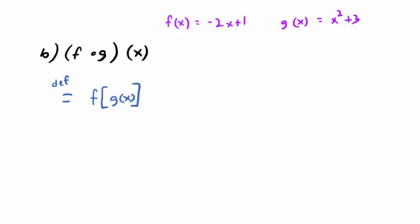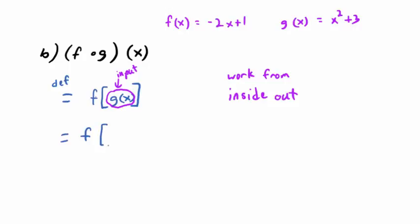When you write f of g of x, that's just function notation, and it's telling you that the input into f is now g of x — the formula for g of x, which in this class there almost always is. So work it from the inside out. Replace g of x with what it's equal to. So f of g of x is f of x squared plus 3. I'm using brackets here just to distinguish from the inner parentheses. You do read this as f of x squared plus 3. Wherever you see an x in the formula for f, you're going to replace that with that entire quantity, x squared plus 3.